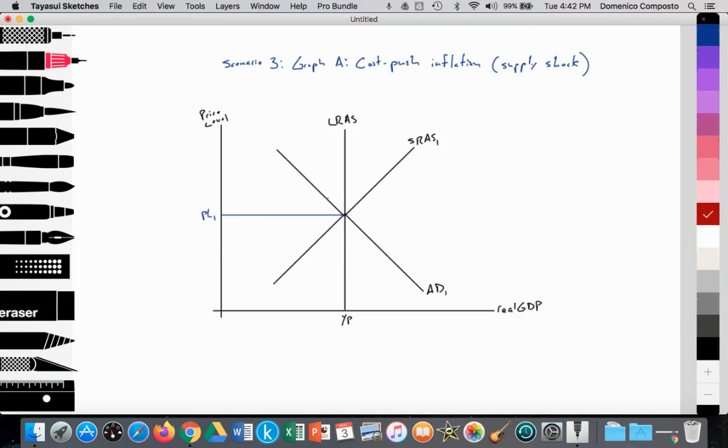So here we have the intersection of AD1, SRAS1, LRAS. That's point A. You can make a note where AD1 is equal to the short-run aggregate supply curve 1, which is equal to the long-run aggregate supply curve. That provides an equilibrium price level at PL1. And we're going to assume that perhaps we have a moderate level of inflation at about 2%. And then we have real GDP at full potential at YP. We're fully employing our resources. So perhaps this is the U.S. economy.